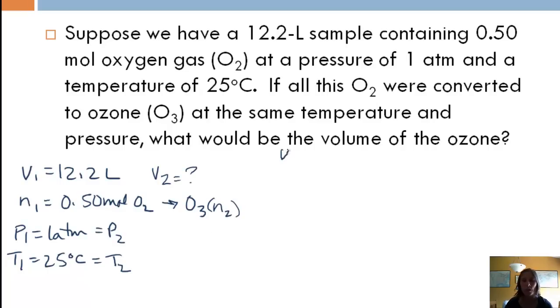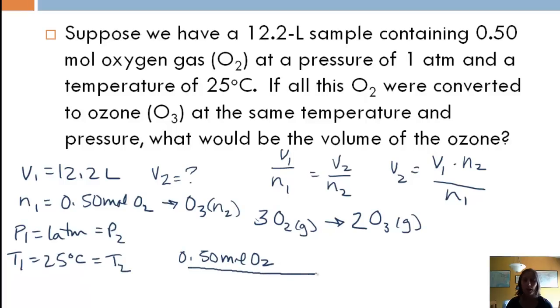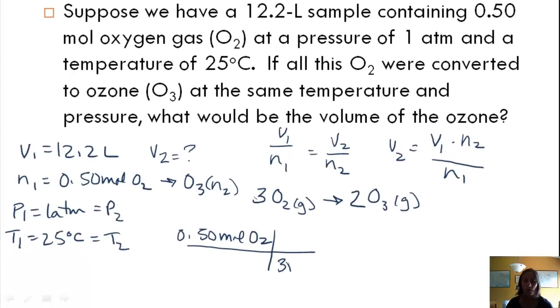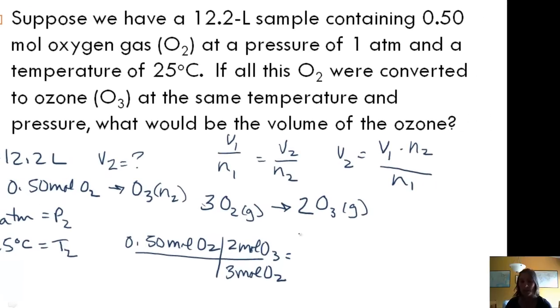Converting to O3 is going to give us our N2. Well, let's look at our relationship first. We know V1 over N1 equals V2 over N2. If I'm solving for V2, that gives me V1 times N2 over N1. Well, I need N2. If the oxygen, the O2, is converted to O3, I need to write an equation for that. So I've got O2 as a gas going to O3 as a gas. Well, the only way to balance this is to have two O3s and three O2s. And so if I have 0.5 moles of O2, I'm going to use my mole ratio to convert to O3. I know for every three moles of O2, there are two moles of O3, and so I'm going to take my 0.5 and multiply it by two-thirds, and that's going to give me 0.33 moles of O3.